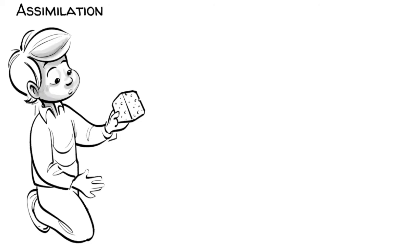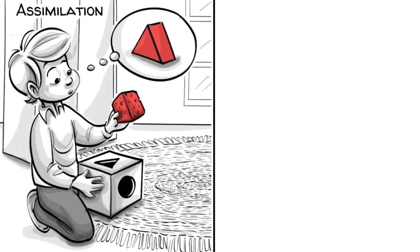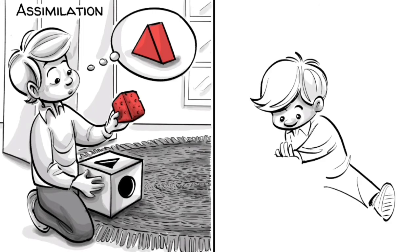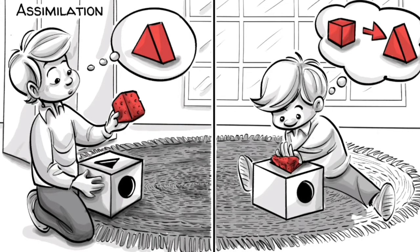Assimilation is the cognitive process of making new information fit in with your existing understanding of the world. It works if new information is close to what we already know. To process the new information, we make it fit into our existing schemas.